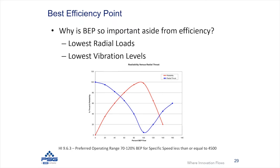When you're operating a pump at that best efficiency point, you're going to see the lowest radial loads. There's a chart here with the thrust and reliability of the pump on the vertical axis, and the percent of BEP flow on the horizontal axis. As you can see in the example, when you're operating a pump at best efficiency point — that 100% mark — the radial load, shown in blue, is very low. That's because the impeller and the casing are designed to operate at that particular flow rate.